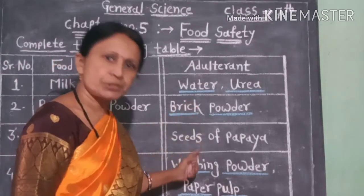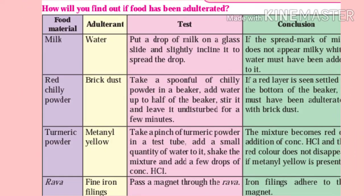Do you understand this chart? Then your next paragraph: How will you find out if food has been adulterated? Look at the chart, students. The columns are: food material, adulterant, test, conclusion.